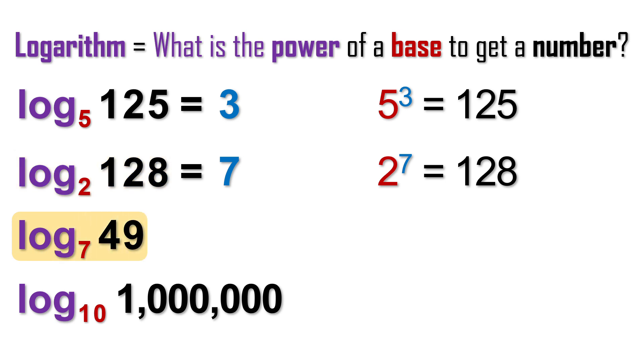Log base 7 of 49. What power of 7 gives us 49? The answer is 2, because 7 squared is 49.